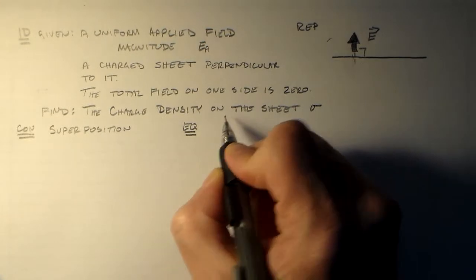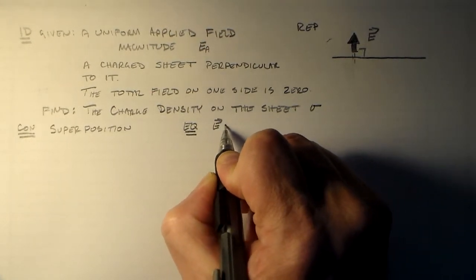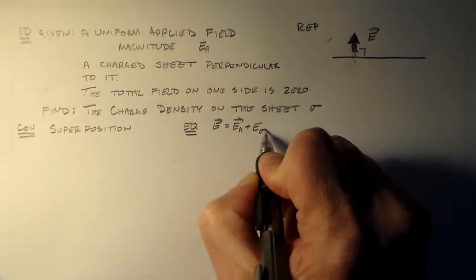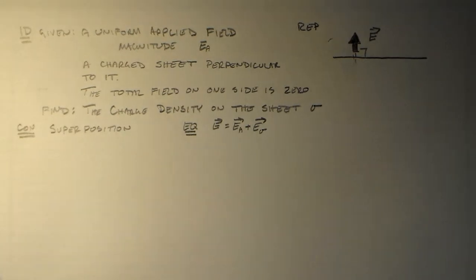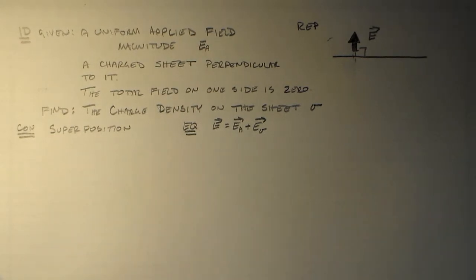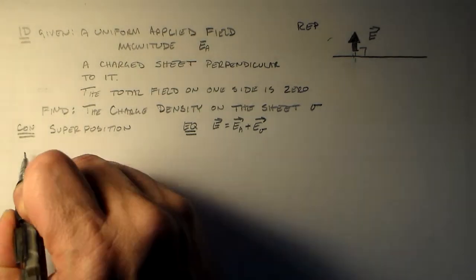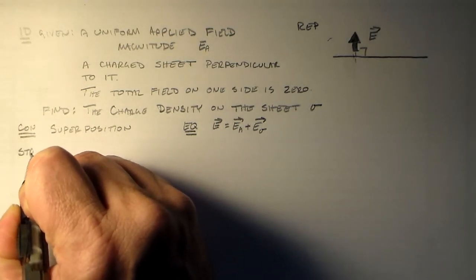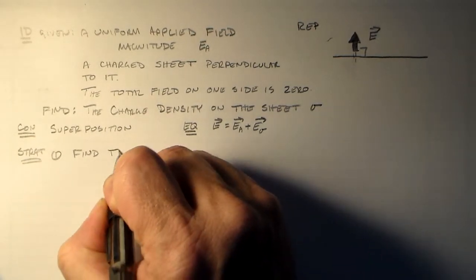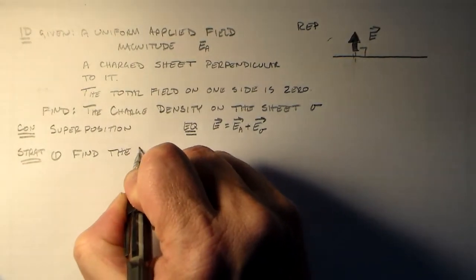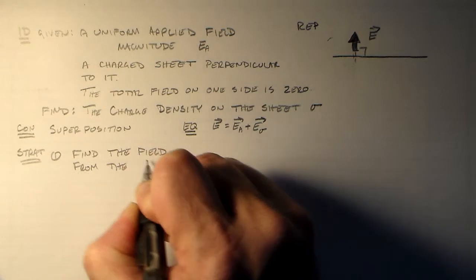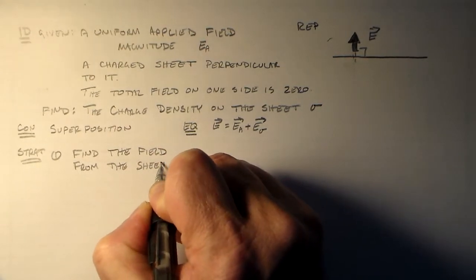I guess we could add in a Gauss's law bit, but we won't do that basically because we've already done this for the sheet. We've done Gauss's law over and over and over already. So we already know what the field is from the sheet. So our strategy is to one, find the field from the sheet.